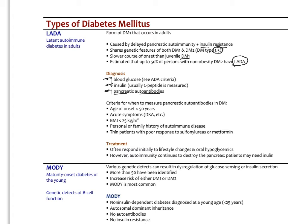Consider measuring autoantibodies in a type 2 patient when: the age of onset of diabetes is under 50; there are any acute symptoms suggestive of diabetic ketoacidosis; BMI is under 25 (non-overweight or non-obese individual); there is a personal or family history of autoimmune disease such as autoimmune thyroiditis or celiac disease; or any thin patient with poor response to metformin or sulfonylureas.